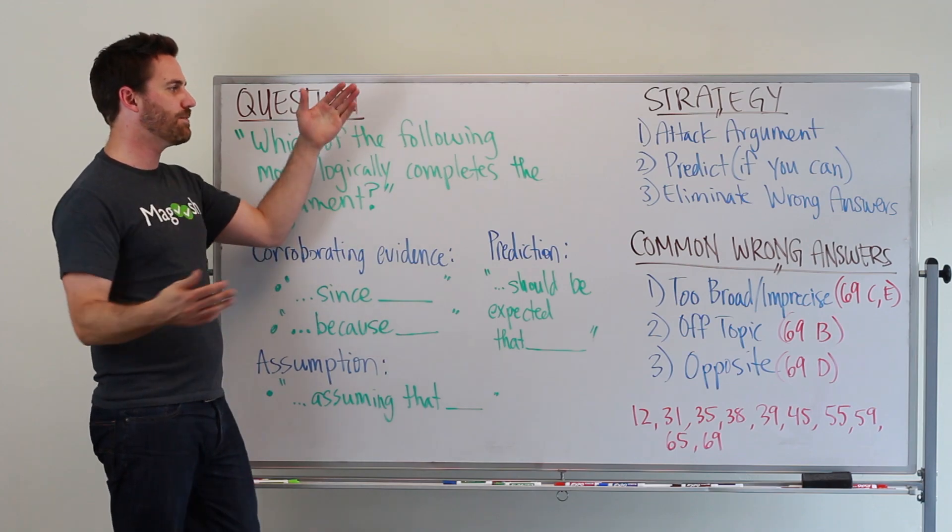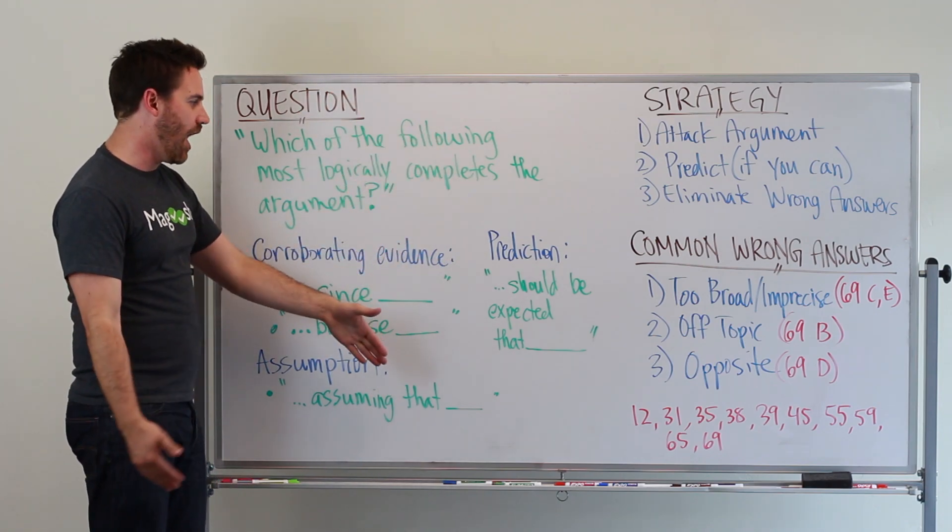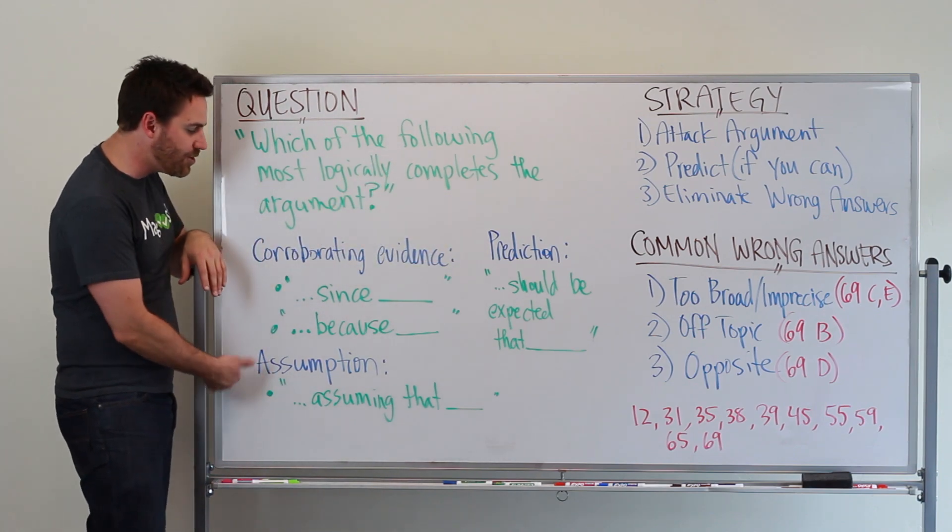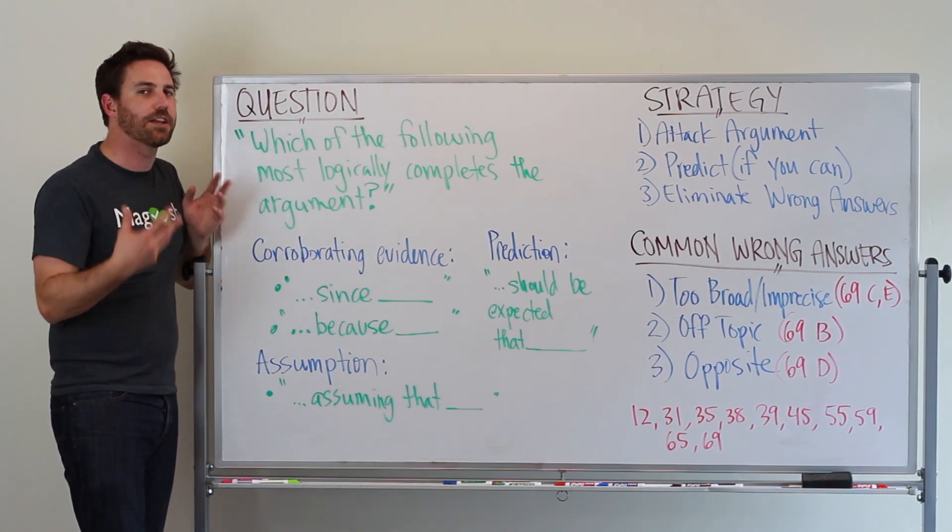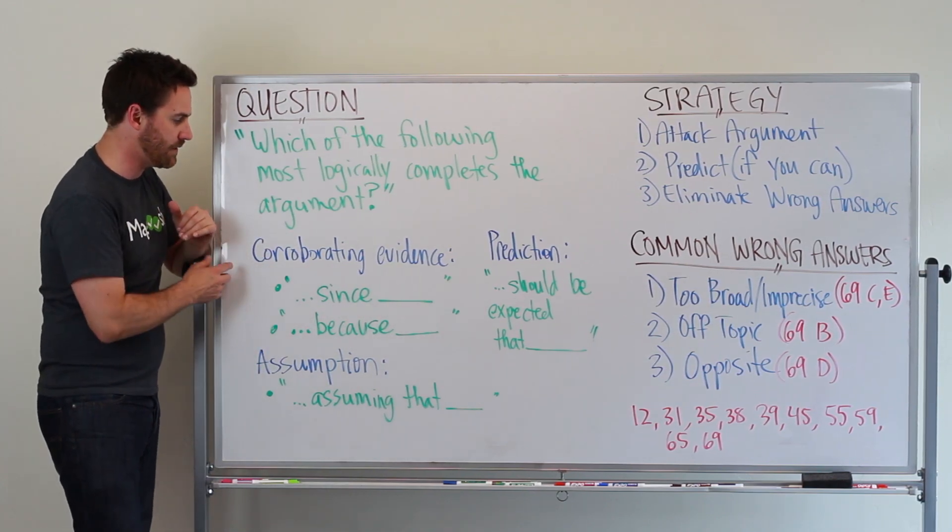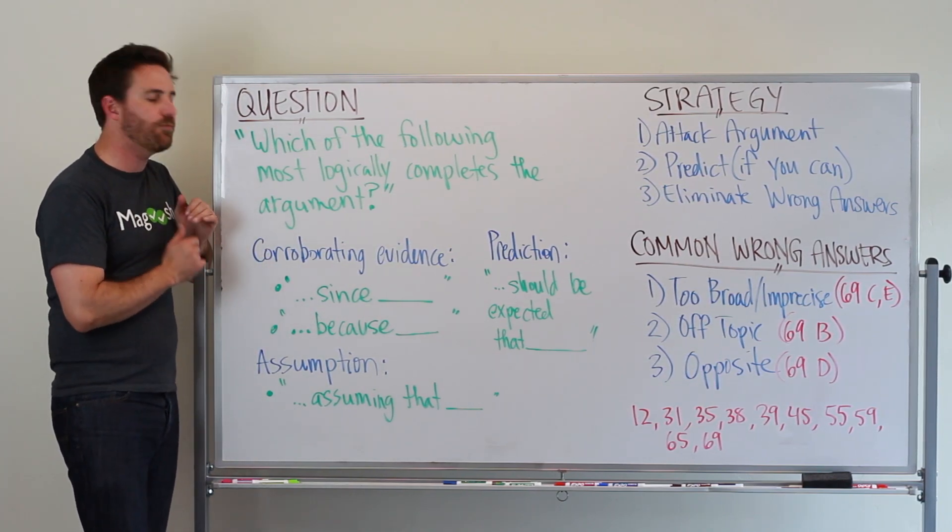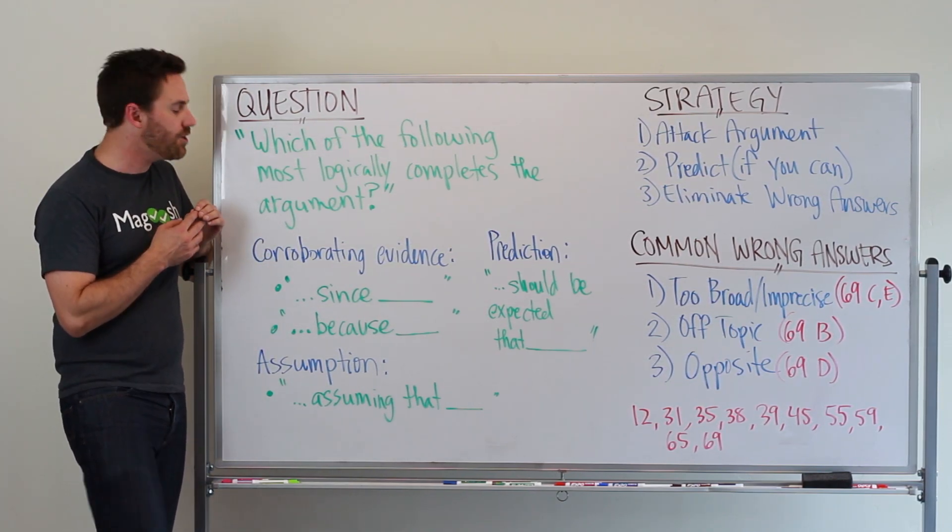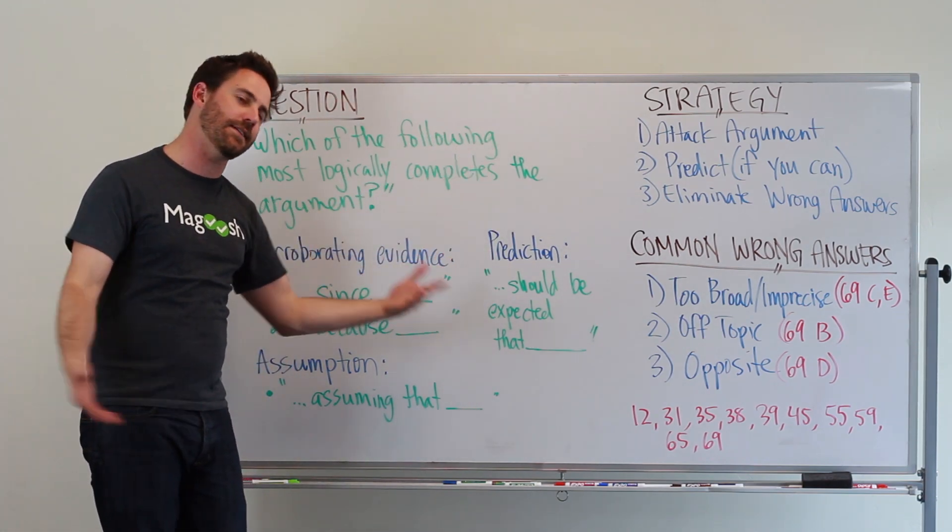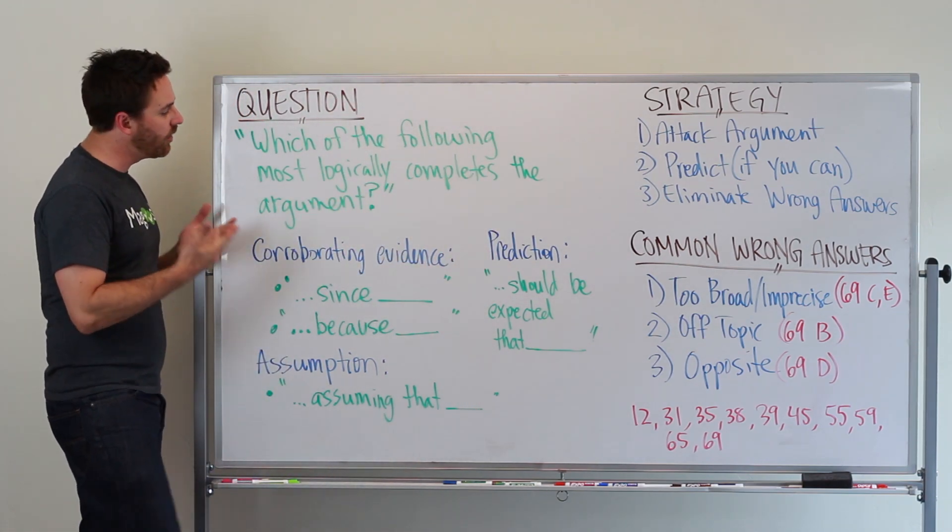Step two is predict if you can. With the prediction type, you definitely can predict. Assumptions, you can sort of predict. You can at least start to identify some assumptions before diving into the answer choices. The corroborating evidence one will be a little bit harder to do any prediction for. In some cases it will be really easy, in some cases it will be a little bit harder.